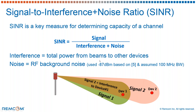In addition to interference, we used RF background noise based on some literature. We assumed approximately negative 87 dBm of noise based on an assumed 100 megahertz bandwidth and ambient noise levels that have been measured in some of the literature at these frequencies.